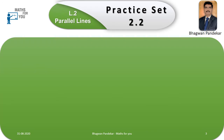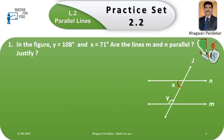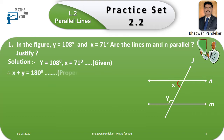Lesson number two: Parallel Lines, Practice Set 2.2. Example number one: In the figure, y is equal to 108 degrees and x is equal to 71 degrees. Are the lines m and n parallel? Justify. Solution: y = 108°, x = 71°. Therefore, x plus y is equal to 180 degrees — the property of interior angles of parallel lines.